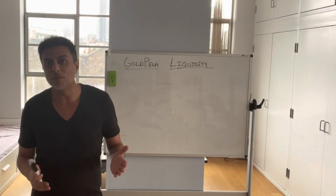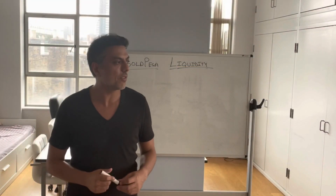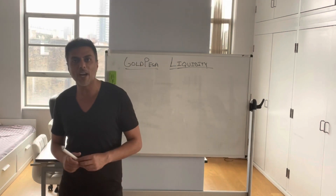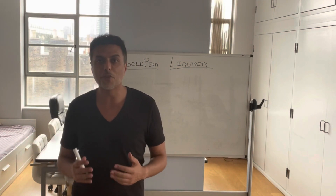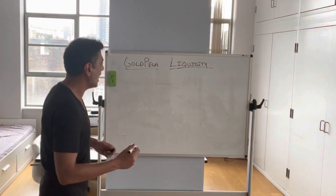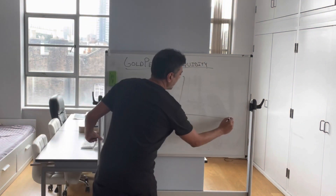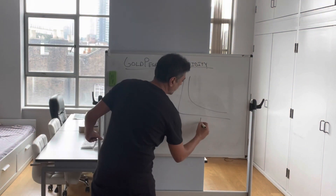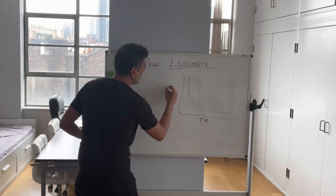With the magic of Uniswap version 3, which I don't think the market has quite understood how powerful version 3 of Uniswap really is, what has happened with version 3 — if we look at this price chart between token A and token B...